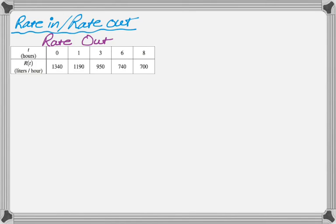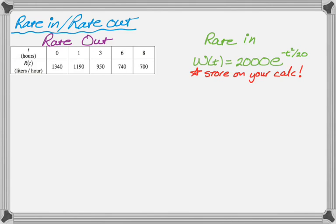So this is what we know about the rate out. We're also told that R(t) is a decreasing function, but we don't actually need that for this part, so I'm going to not include it right now. The rate in is given as a function, and on the calculator section, the first thing you should do when you're given a function is store that on your calculator so that you can check it three times when you store it and not worry about typing it in incorrectly over and over again. So store that on your calculator.